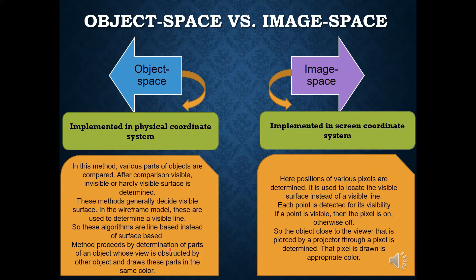The object space method proceeds by determining the part of an object whose view is obstructed by other objects and draws this part in the same color. In image space, the position of various pixels are determined. The screen coordinate system deals with pixels, and image space is used to locate the visible surface instead of a visible line.